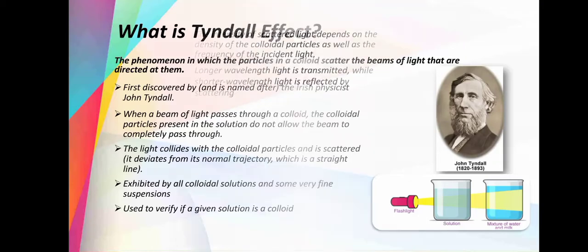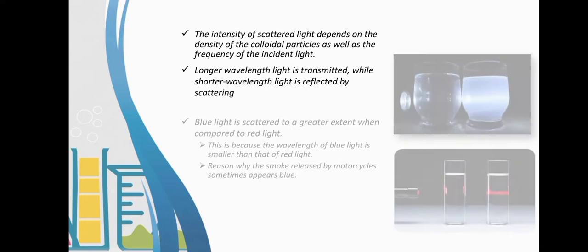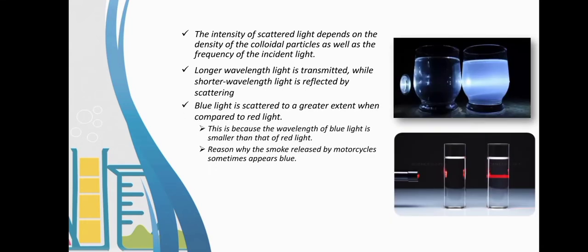The intensity of scattered light depends on the density of the colloidal particles as well as the frequency of the incident light. Longer wavelength light is transmitted while shorter wavelength light is reflected by scattering. Blue light is scattered to a greater extent when compared to red light. This is because the wavelength of blue light is smaller than that of red light. This is the reason why smoke released by motorcycle sometimes appears blue.